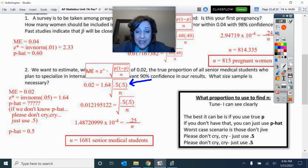So the best it can be is if you use true P, but if you do not have that, then of course we use our P hat. Worst case scenario is those don't jive. Please don't cry, please don't cry, just use 0.5. And of course we have a song for that. So let me play that for you real quick.